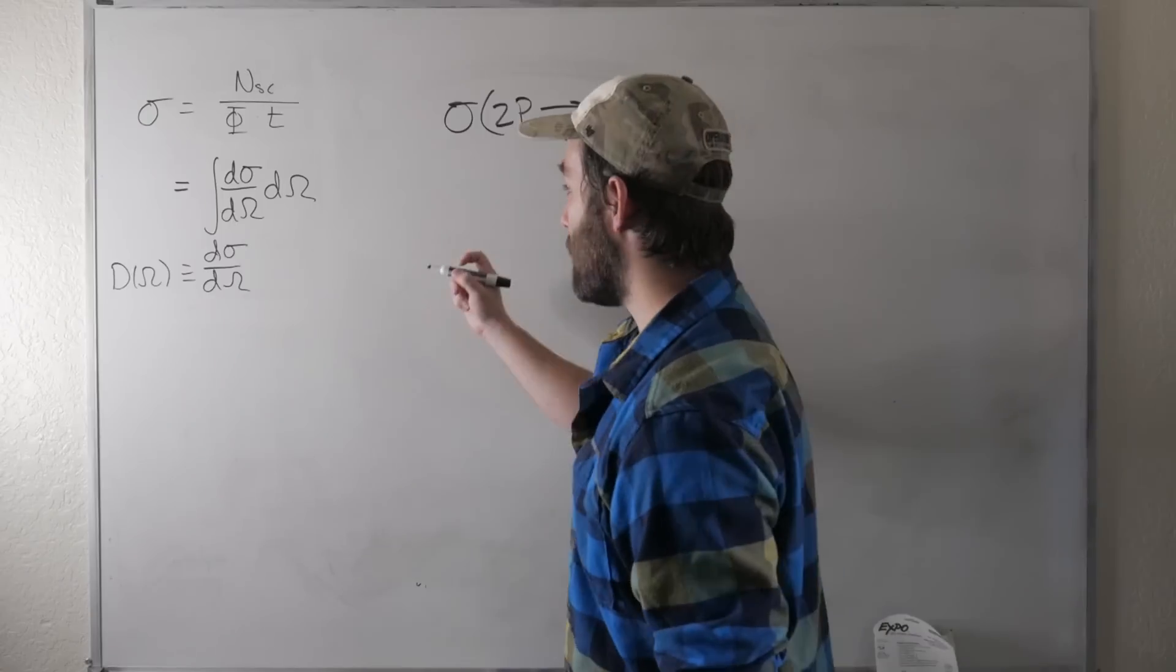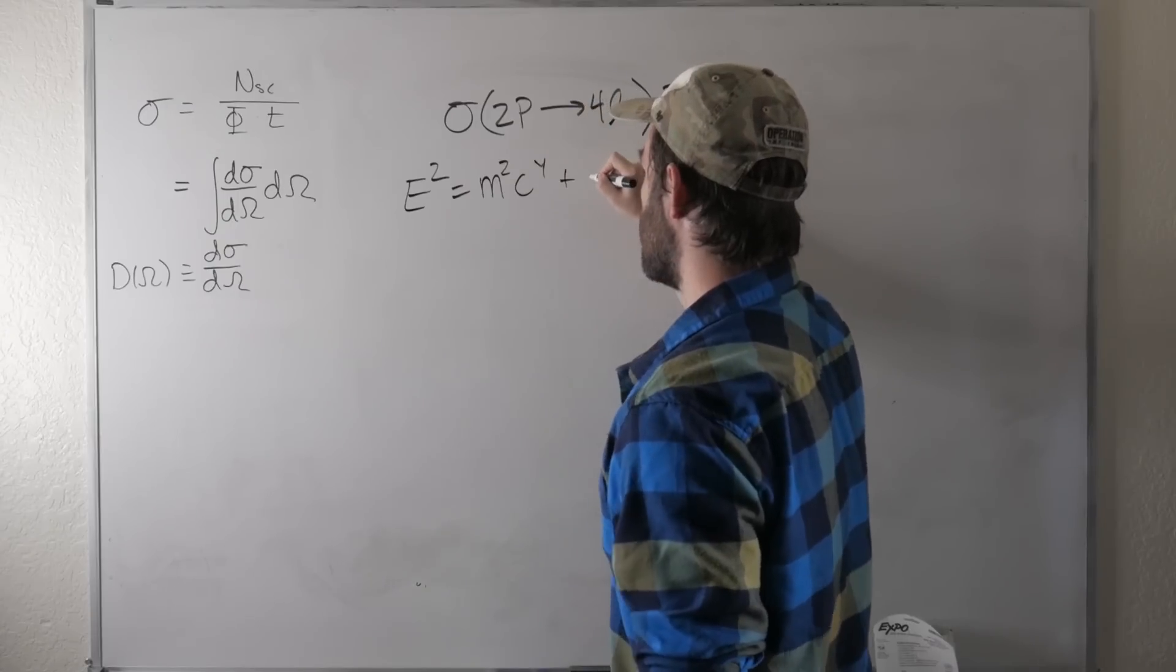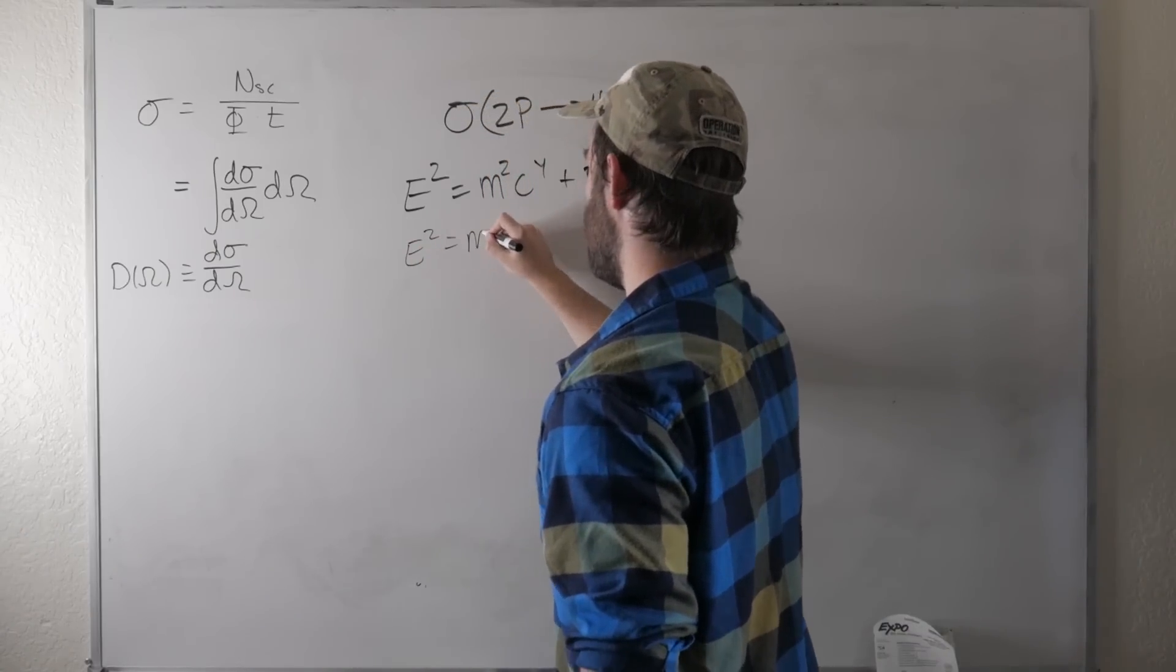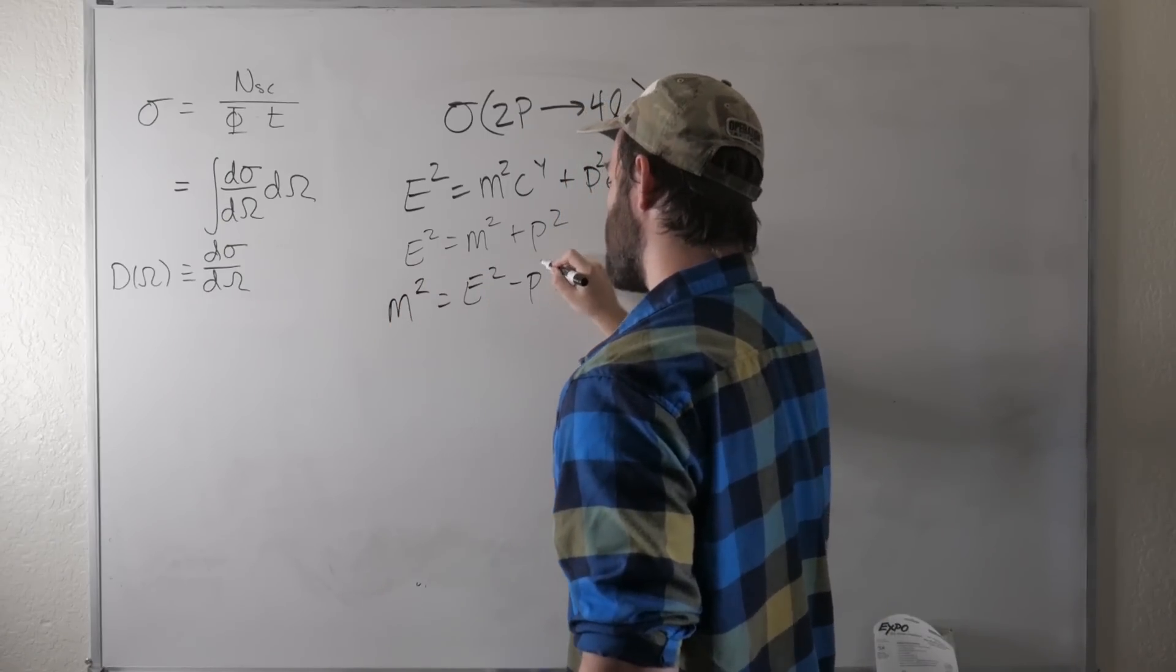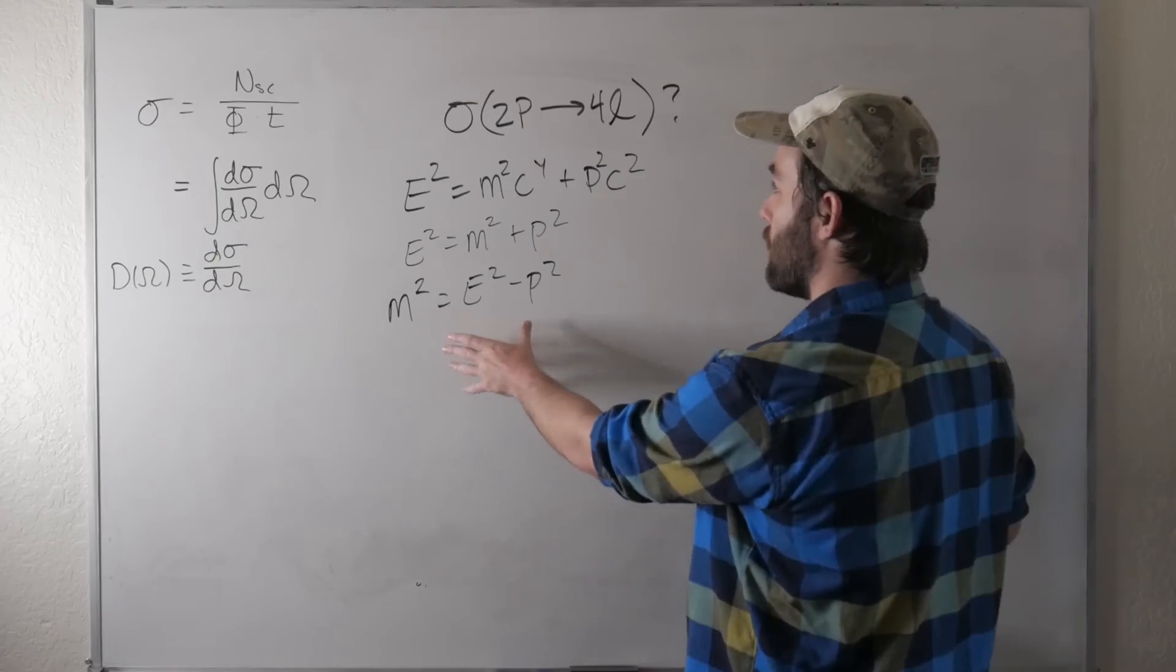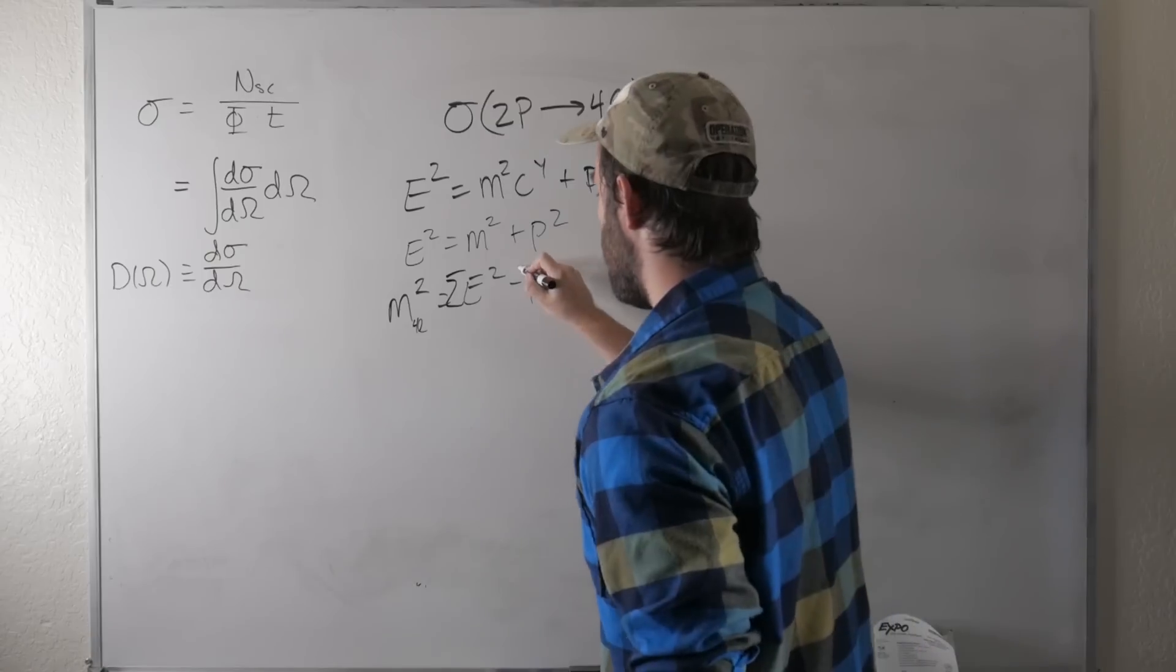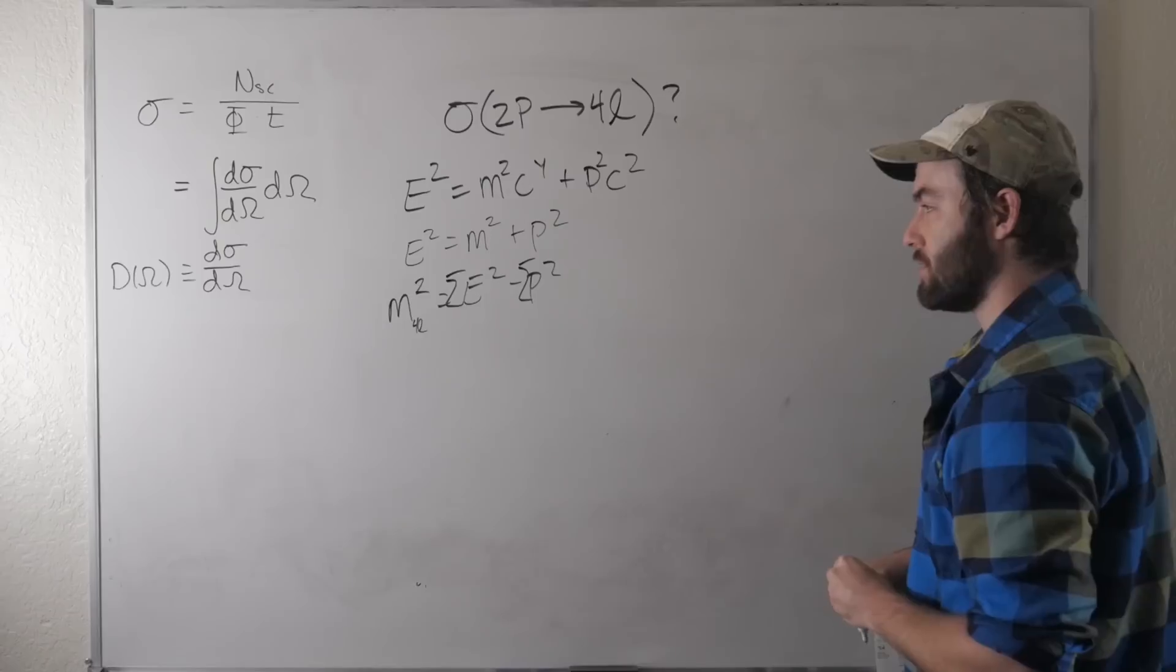If you have one particle, we know that energy squared is equal to m squared c to the fourth plus p squared c squared. Let's drop the factors of c. We're just using natural units or c is equal to one, in which case e squared is equal to m squared plus p squared. Solving for the mass, we get m squared is equal to e squared minus p squared. And the mass of a particle doesn't depend on your reference frame. Don't let anyone ever tell you otherwise. If we have a bunch of particles in the final state like four leptons, then the invariant mass of the four leptons would be equal to the sum of the energies of the four leptons minus the sum of their momentum. And this is a Lorentz invariant quantity, so it's nice to define these differential cross-sections in terms of.